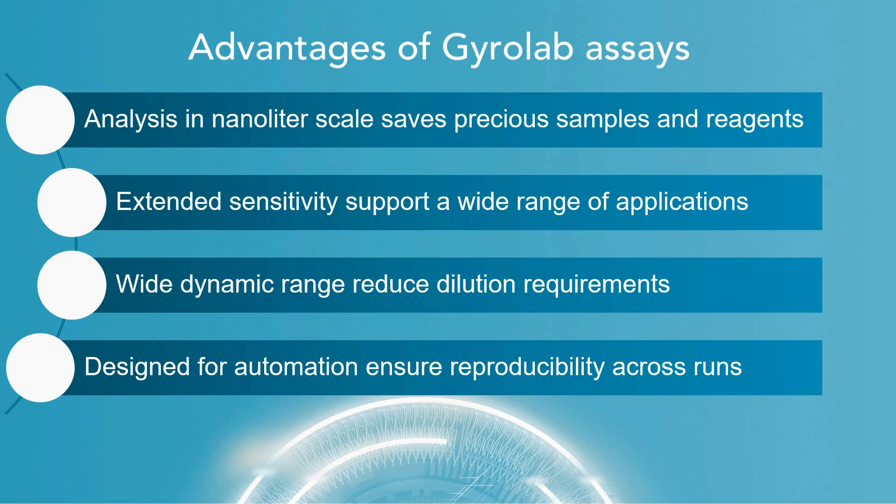Gyrolab can accurately measure a wider concentration range of analytes in a sample without dilution steps. The Gyrolab system is designed for automation, which reduces the possibility of manual errors that can occur during sample processing, resulting in reproducibility and reliability between runs.